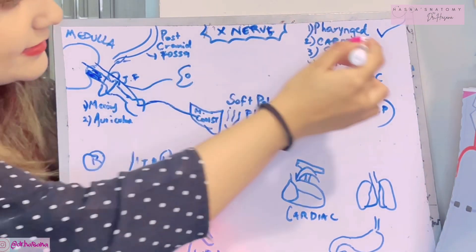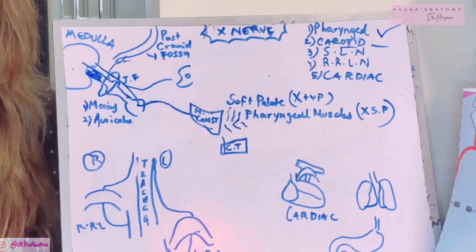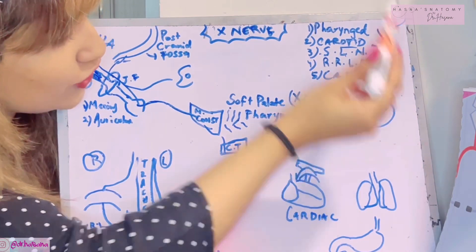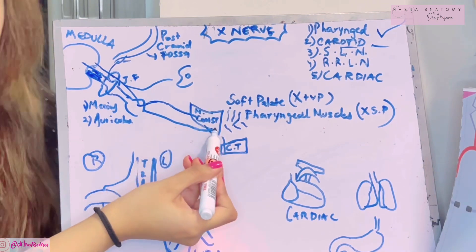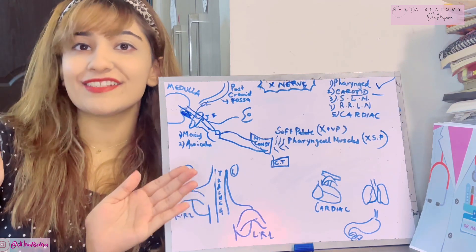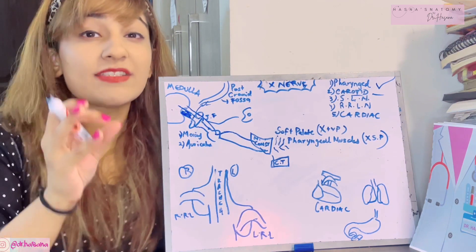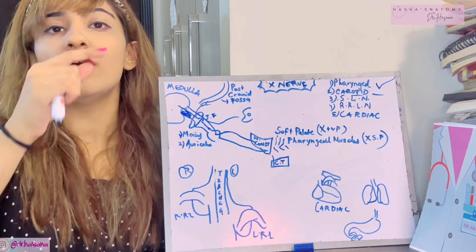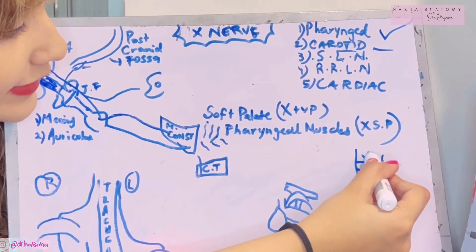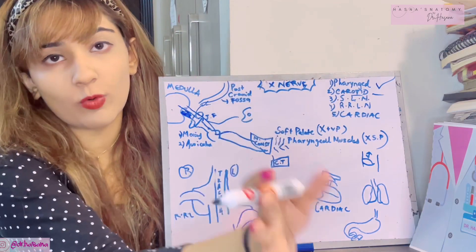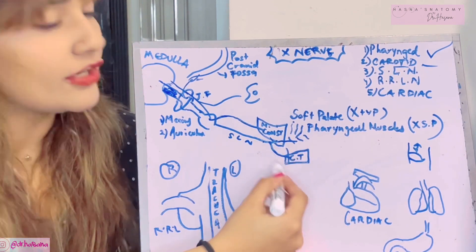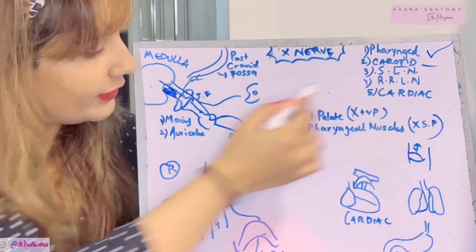The next branch is the carotid branch, which goes to the carotid sinus and carotid body. After that, the superior laryngeal nerve arises, goes to the middle constrictor, and divides into two branches: the internal laryngeal nerve and the external laryngeal nerve. The internal laryngeal nerve supplies the mucous membrane of the larynx above the vocal folds. The external laryngeal nerve pierces the thyroid membrane and supplies one muscle — the cricothyroid muscle.